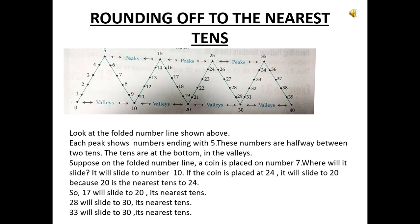This is the rule for rounding off to the nearest tens. This figure is given in your book - it is called a folded number line. There are peaks and valleys. Each peak shows numbers ending with five; these numbers are halfway between two tens. The tens - 0, 10, 20, 30, 40 - are at the bottom in the valleys, whereas 5, 15, 25, 35 are at the peaks.